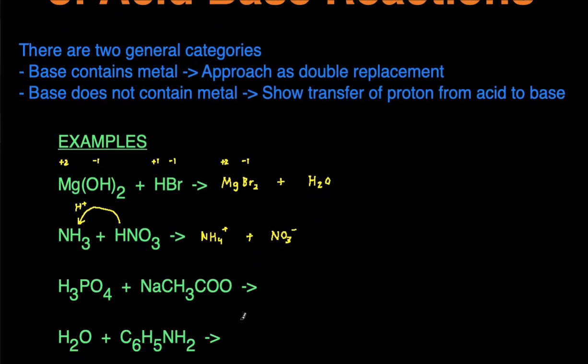Let's take it up a step and look at something that seems a little bit more complicated but it's really not too bad. Here we have H3PO4 reacting with sodium acetate, NaCH3COO. We first know that this is going to be the acid because there's H in the front. This is then going to be the base. We look at the base to see if there's a metal or not. Sodium is a metal, so we're going to approach this as if it's a double replacement reaction.